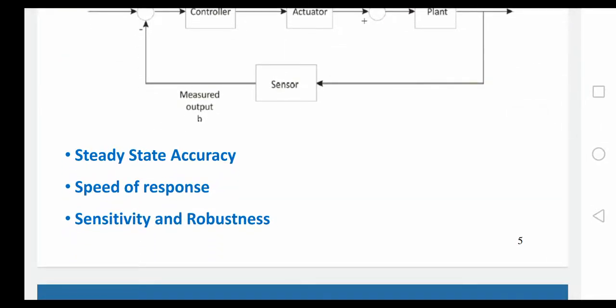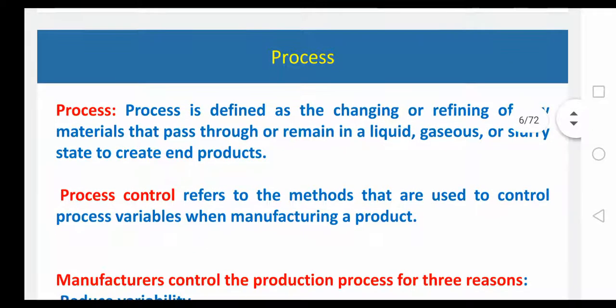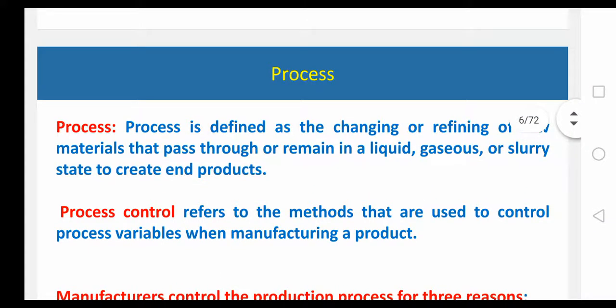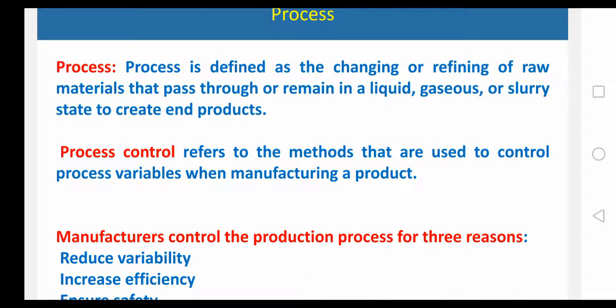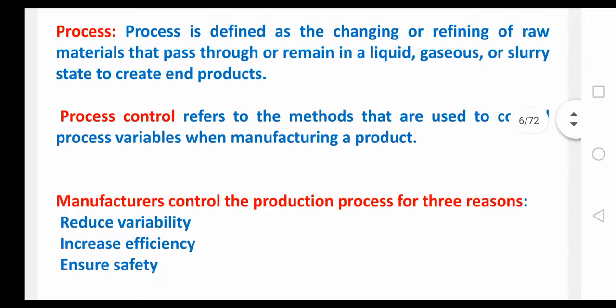Here steady state accuracy, speed of response, sensitivity and robustness we are discussing. Process — in the plant the complete process will be going on. For example, if you are taking a chemical industry — so and so chemical you require 100 degree temperature. You are going to do that all the process in the plant. Process is defined as the changing or refining of raw material that passes through or remains in a liquid or gaseous or some other state to create end products. Process means plant, and that plant will give us some end product.